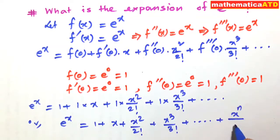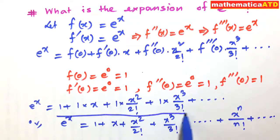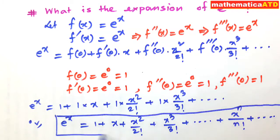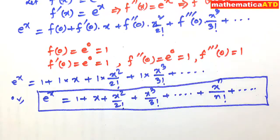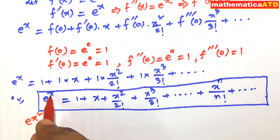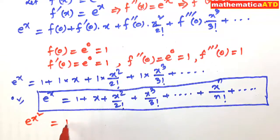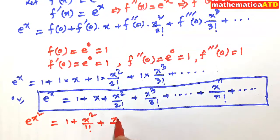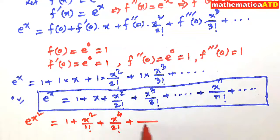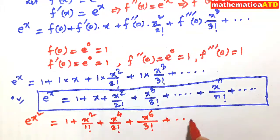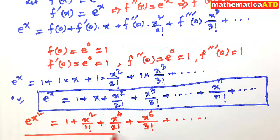Sometimes you may find x to the power n divided by n factorial plus so on as the general term. Now, if it is asked to find the expansion of e to the power x², then you have to replace x by x² in the expansion. So the expansion will be 1 plus x² divided by 1 factorial plus x⁴ divided by 2 factorial plus x⁶ divided by 3 factorial plus so on. This is the expansion of e to the power x².